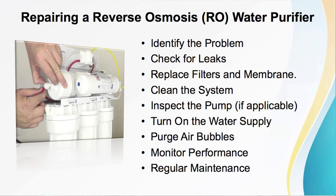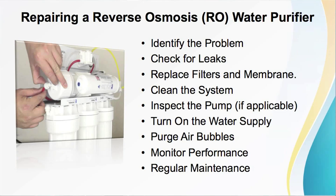Once you have replaced the filters, membranes, and completed any necessary repairs, turn on the water supply to the RO unit. Then flush the air bubbles — open the RO faucet to flush any air bubbles from the system. Allow the system to run for a few minutes until the water runs clear and is normal. Then monitor the performance — monitor the RO unit's performance over the next few days to ensure it is producing clean, purified water and that the issue has been resolved.